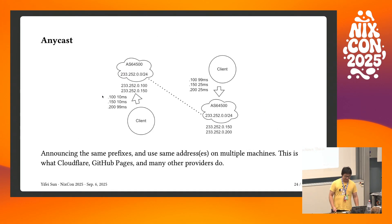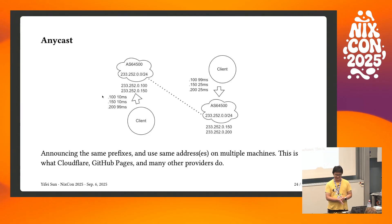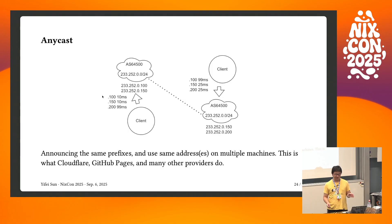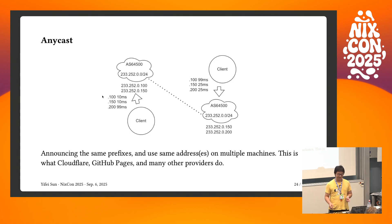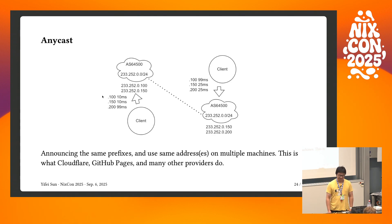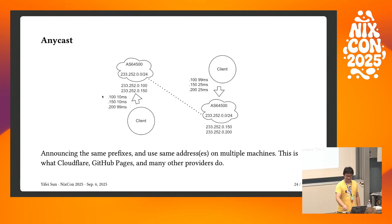What you get from this setup is Anycast. With Anycast, you can use the exact same IP address on two different machines, and a client accessing that IP will get the lowest possible latency based on the BGP infrastructure. Many providers already use this — GitHub Pages, Cloudflare, and Google all use it. It's mostly common in CDN and serving static content.